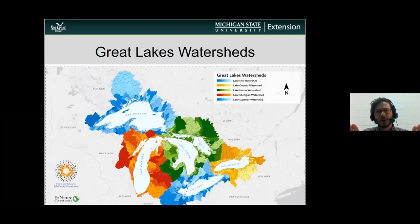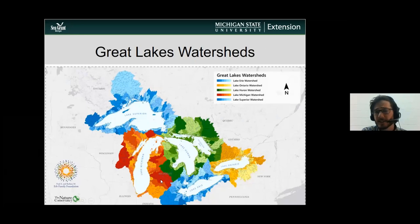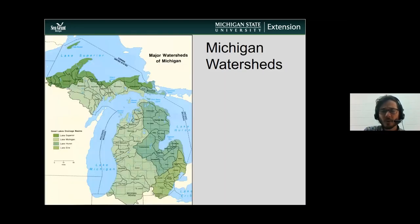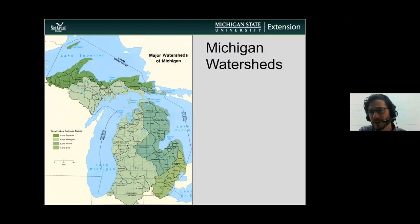Broadly speaking, when we look at watersheds at a high level, we can look at the Great Lakes watershed — everything that drains into the Great Lakes — and the Great Lakes all drain into the St. Lawrence Seaway, which drains into the Atlantic Ocean. Anything done in that land area could be impacting the Great Lakes. Zooming in, we can see watersheds broken up into smaller pieces of land — different river systems and watersheds that drain into Lake Superior, Lake Michigan, Lake Huron, and Lake Erie.